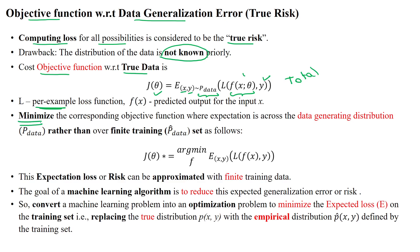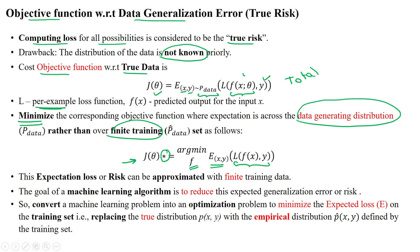To minimize the true data risk, we use the entire dataset from the true data rather than a finite number of samples in the training dataset. To minimize the cost function with respect to the true data distribution, the star denotes minimizing the function value with respect to the expected loss — the loss between the predicted output and the actual output. This is somewhat difficult because we are unknown about the number of samples in the dataset, so we can approximate this expectation loss into a finite number of samples in the training dataset.